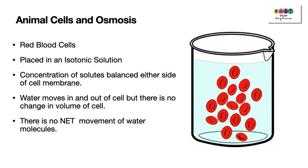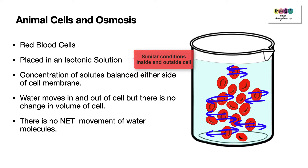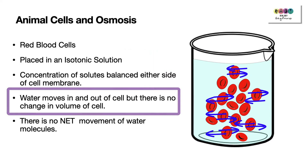How does osmosis affect animal cells? If you place red blood cells into an isotonic solution — where the concentration of solutes is matched inside and outside the cell — water will move in and out of the cell, but there will be no change in volume and no net movement of water in either direction.